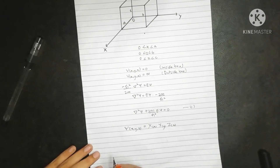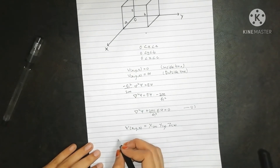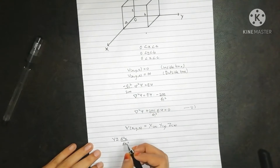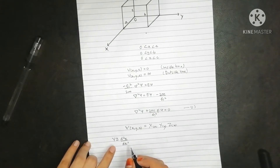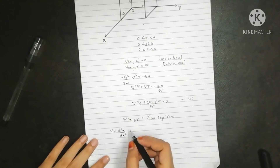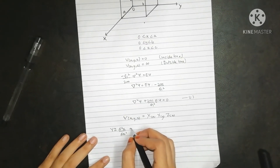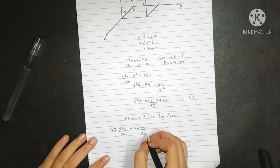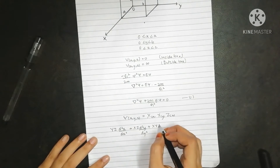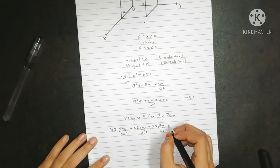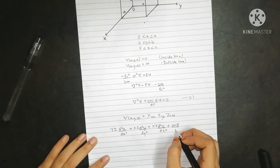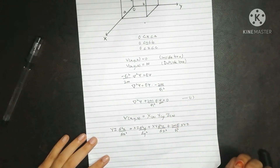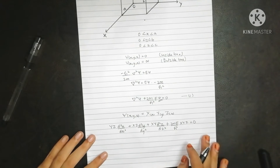In terms of ordinary derivatives, the del-squared psi expands as: Y·Z·(d²X/dx²) plus X·Z·(d²Y/dy²) plus X·Y·(d²Z/dz²) plus (2mE/h-bar²)·X·Y·Z equals zero. Here Y and Z are treated as constants when differentiating with respect to x.